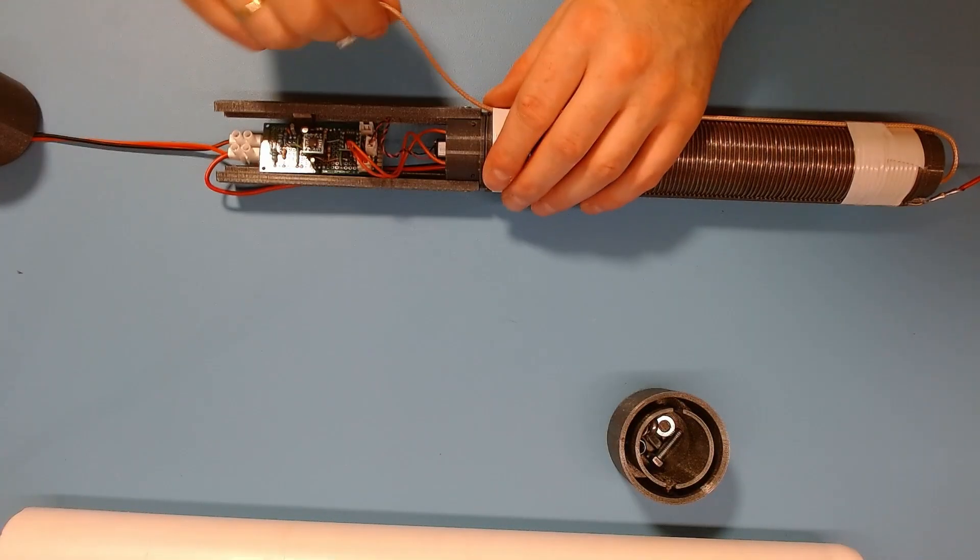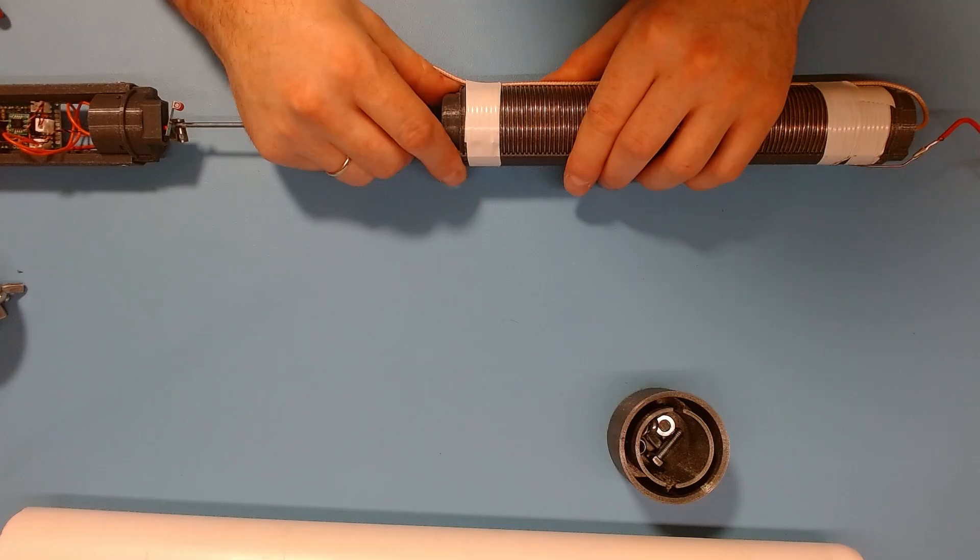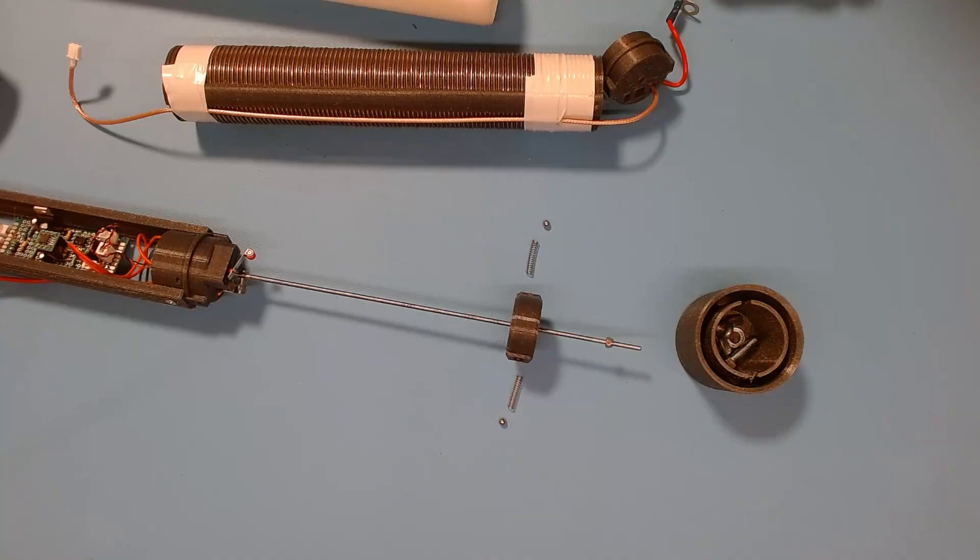By disconnecting a few wires from the circuit board we are now able to pull it apart and reveal an axle with a slider to tap the inside of the coil.